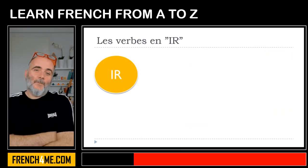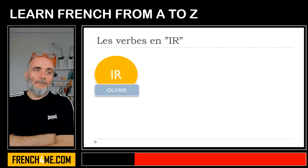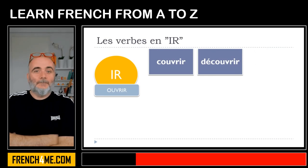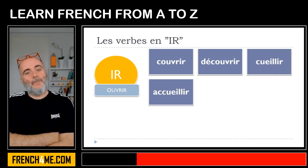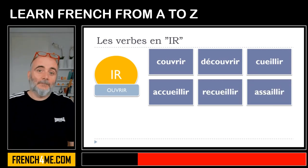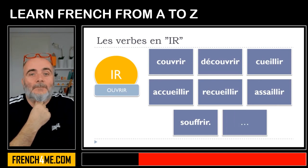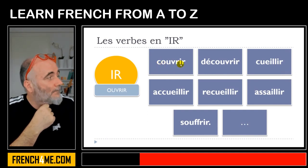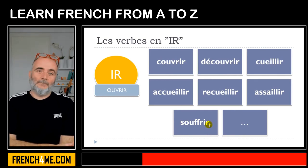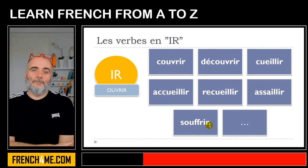Now we'll see a few verbs that will actually be conjugated the same way ouvrir is: couvrir, découvrir, cueillir, accueillir, recueillir, assaillir, souffrir, and a few others. These are the main ones.